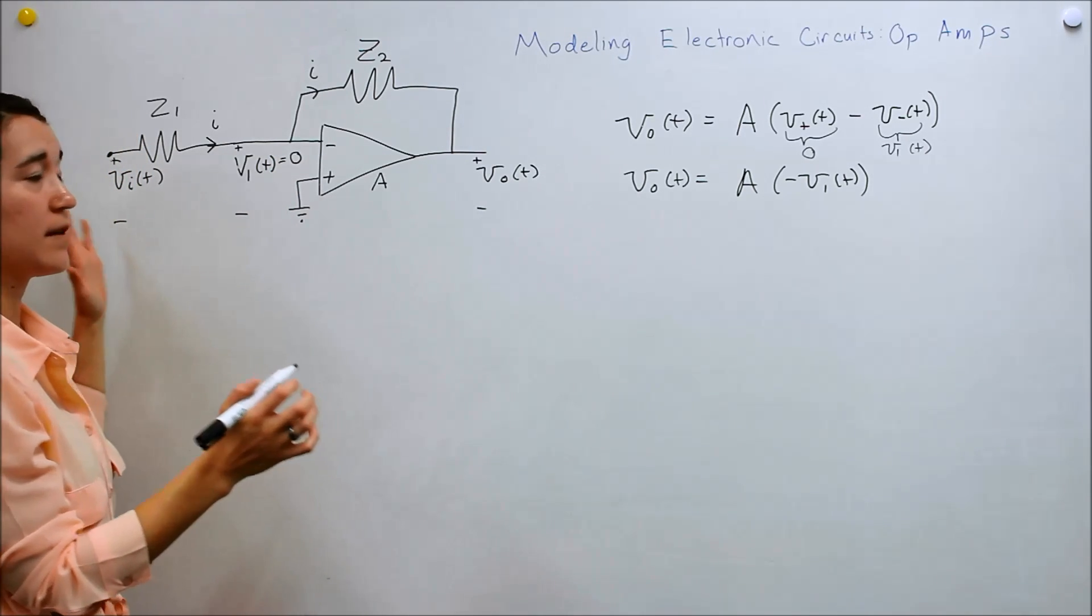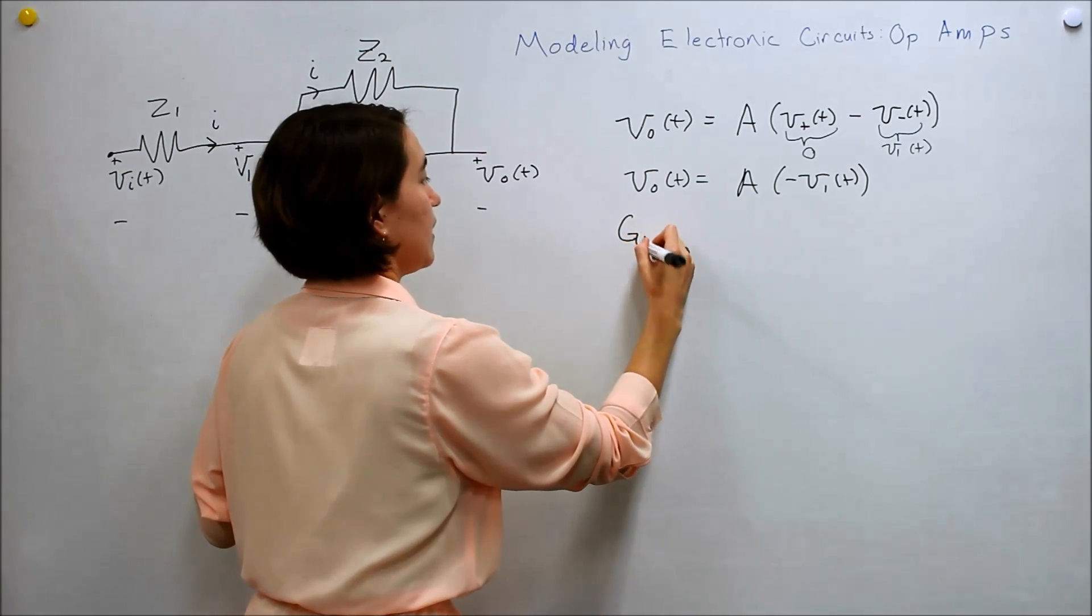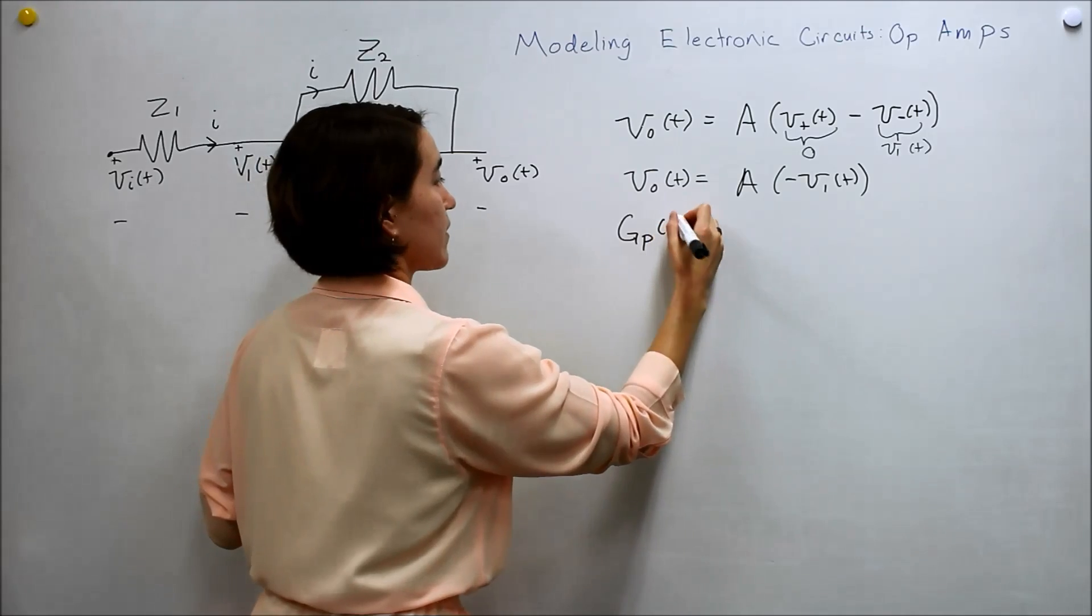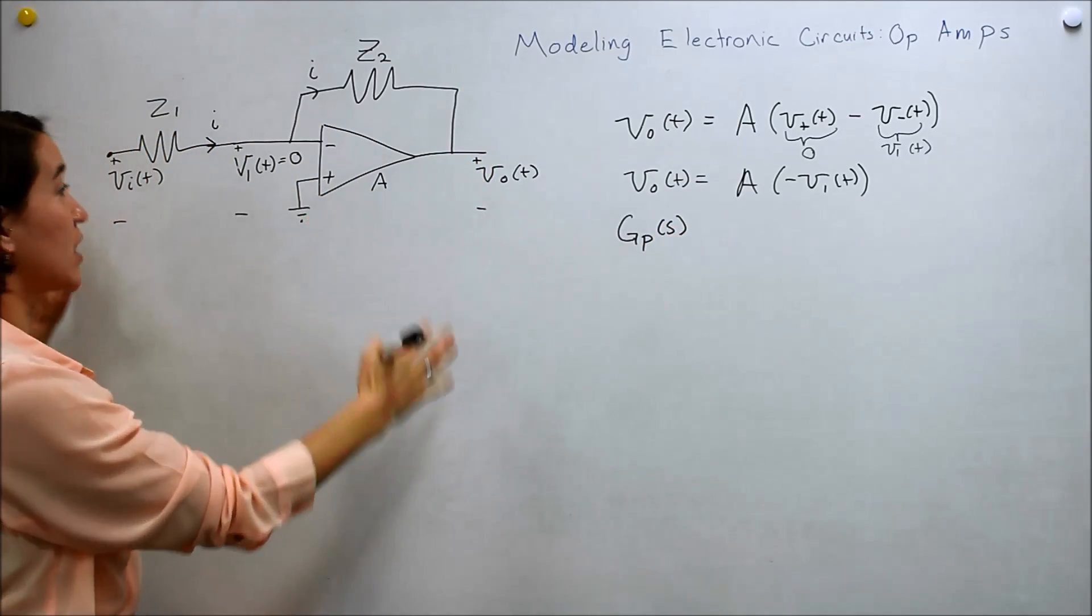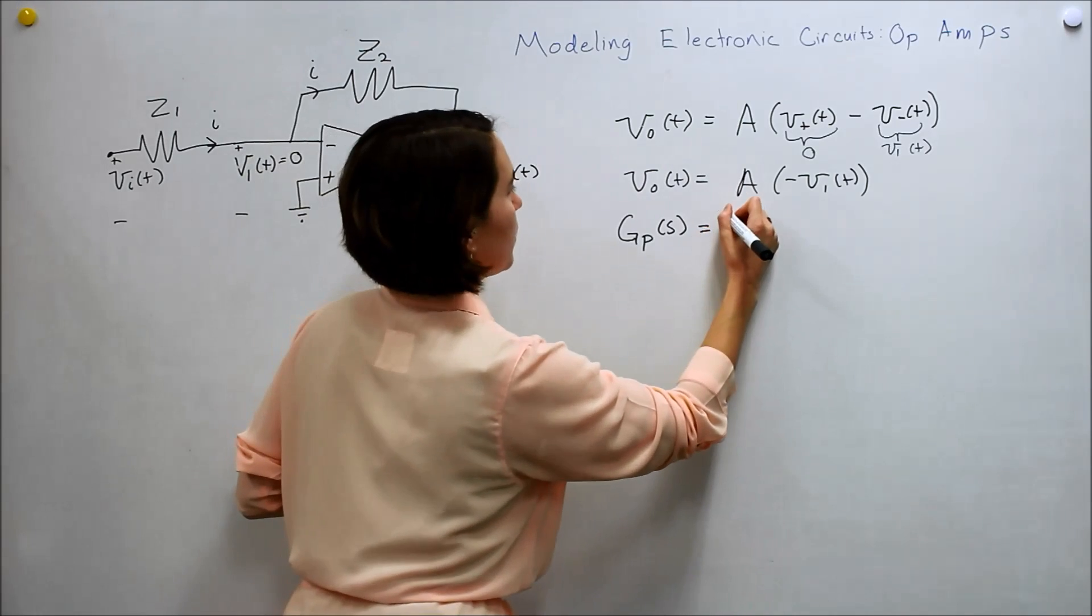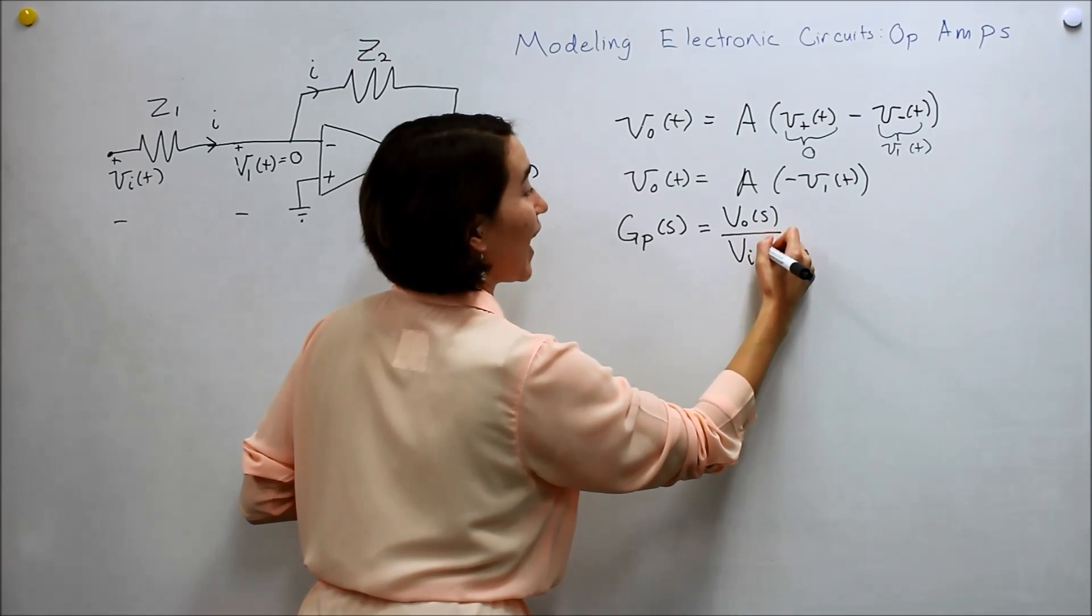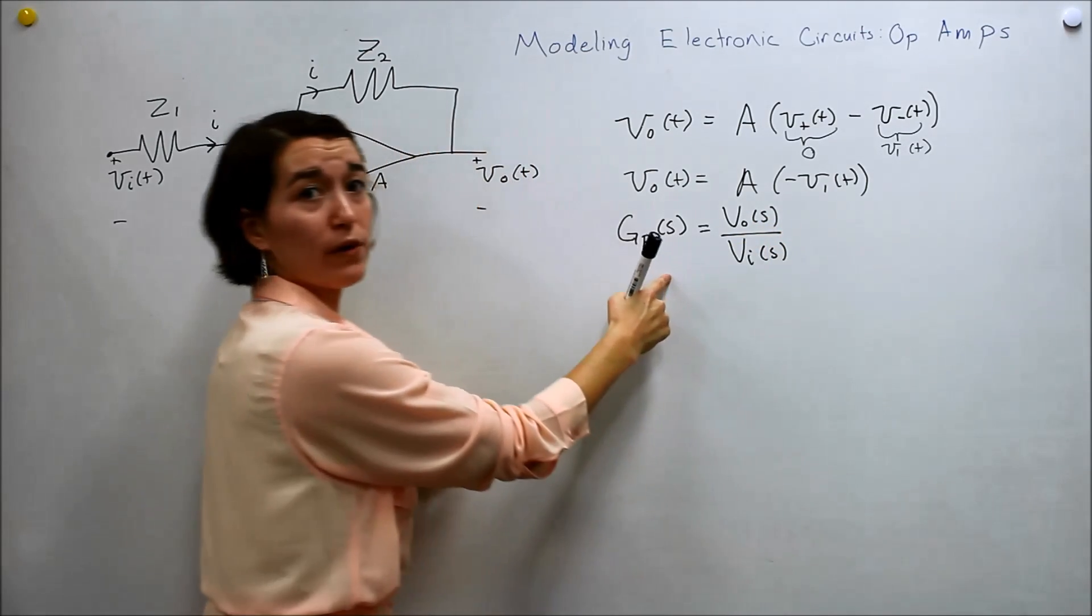So we want to solve this system. So I'll write it over here. We want to solve Gp. So this is our plant transfer function. And we've defined our inputs and outputs. So we want V out of S over V in, the VI of S. So this is what we want to find.